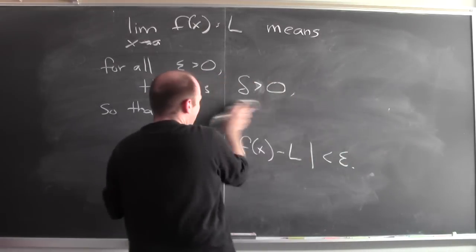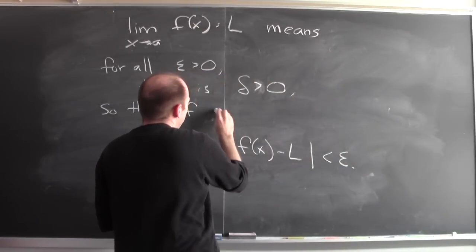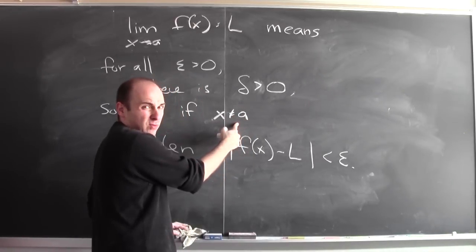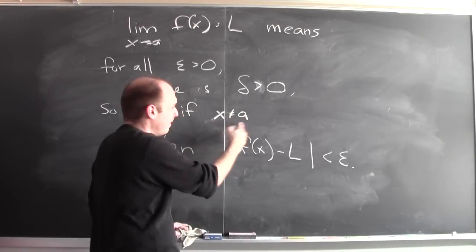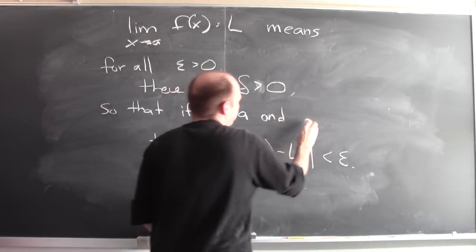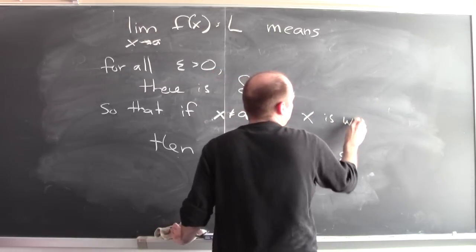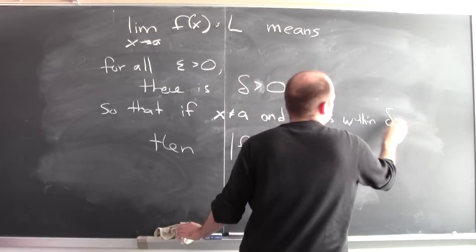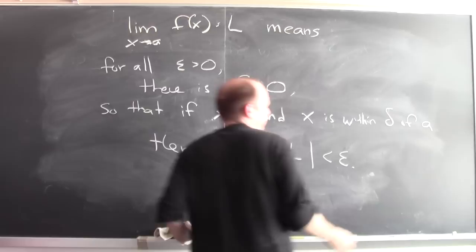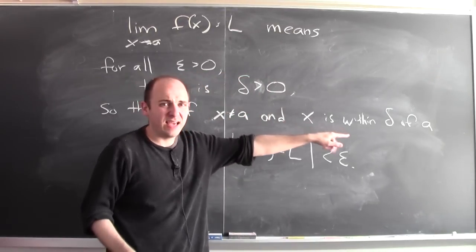Instead of saying that, it's the same thing to say if x is not equal to a, so the absolute value of x minus a isn't 0, and x is within delta of a. So the distance between x and a is delta.